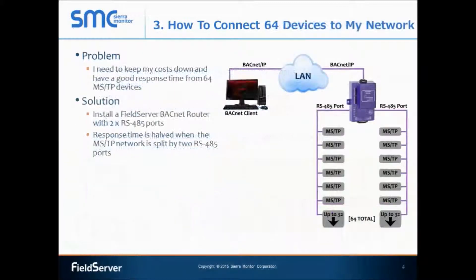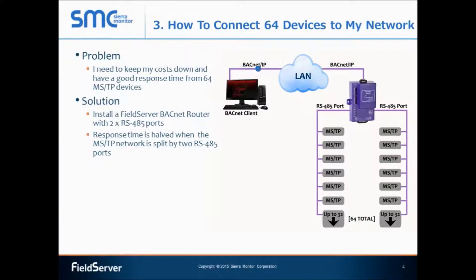Use case number three: how to connect 64 devices to my network. Facilities use BACnet routers to connect BACnet MSTP devices to an IP network. Large facilities often have a large number of MSTP devices and therefore have to deploy multiple BACnet routers, because typical routers usually have a single serial port that connects only up to 32 MSTP devices. As a facilities manager, I have 64 BACnet MSTP devices that I want to cost-effectively connect to my BACnet IP network. The FieldServer BACnet router has two RS485 serial ports, so a single FieldServer BACnet router can connect 64 devices instead of 32. In a large network, this is a cost-effective approach as it can reduce the number of required routers by a factor of two.